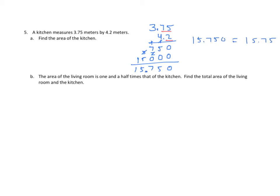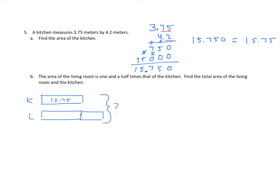Let's read the second problem. It says the area of the living room is one and a half times that of the kitchen. Find the total area of the living room and the kitchen. Well, I'm going to have to use the information from above. I want to find the area of the living room, and then I'm going to have to combine that with the area of the kitchen. So I'm going to make a tape diagram here, and label the kitchen — that is 15 and 75 hundredths — and the living room, which is one and a half times. So we're going to have to find the sum of those.